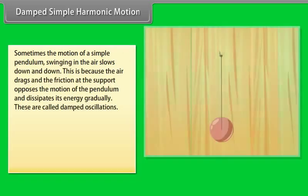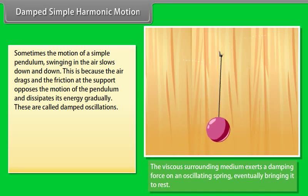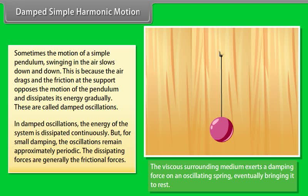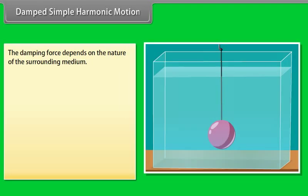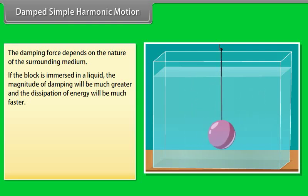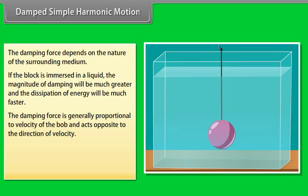Damped simple harmonic motion: sometimes the motion of a simple pendulum swinging in air slows down gradually. This is because air drag and friction at the support oppose the motion and dissipate its energy. These are called damped oscillations. In damped oscillation the energy of the system is dissipated continuously, but for small damping the oscillations remain approximately periodic. The damping force depends on the nature of the surrounding medium. If the block is immersed in a liquid, the damping magnitude is much greater. The damping force is generally proportional to velocity and acts opposite to it: Fd = −bv.